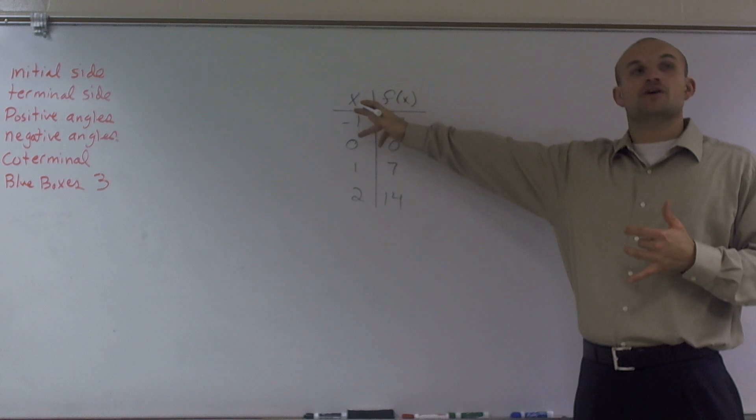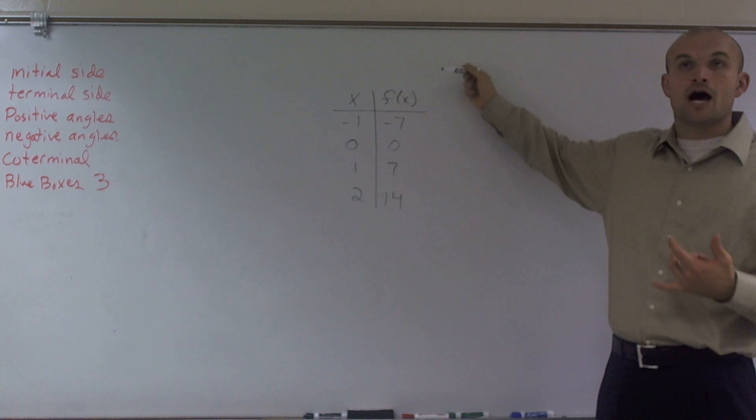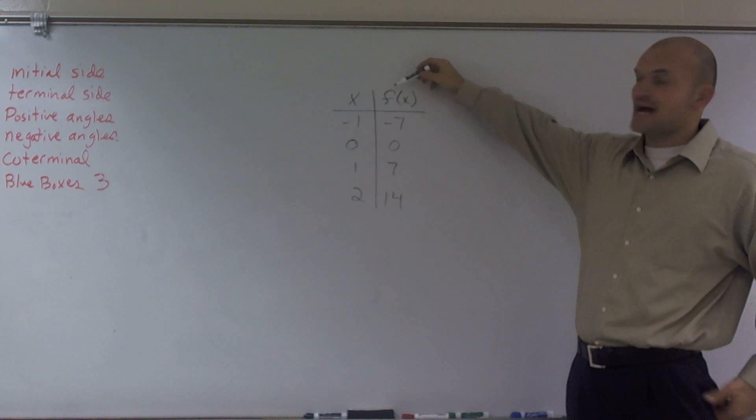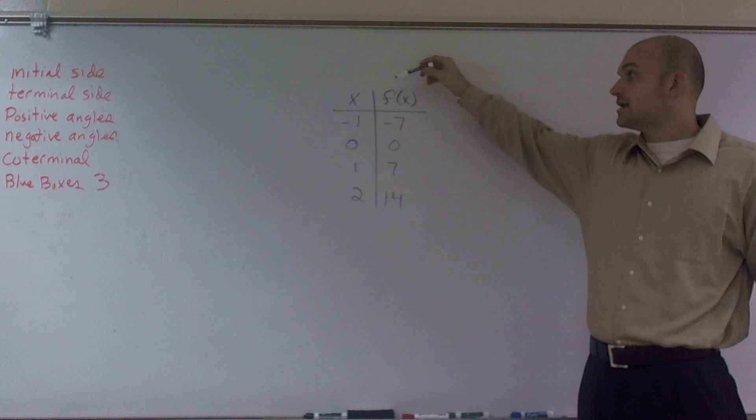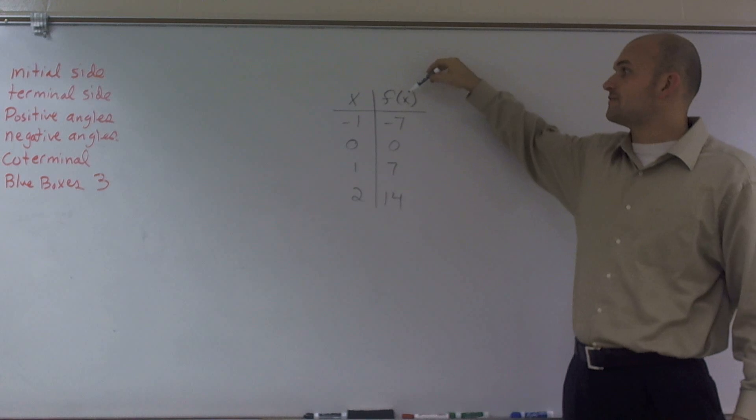A function has an input value, which is x, and then we're going to have an output value. So this f of x, the f represents the name of the function, and x represents the value of the function at x.